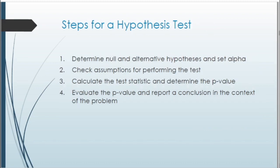This is a hypothesis test, so we have certain steps to follow. First, set our hypotheses. Next, state and check our assumptions for the test. Then calculate our test statistic and determine the p-value. Once we have that p-value, we compare it to our significance level and draw conclusions.